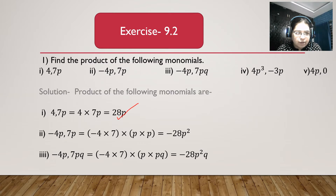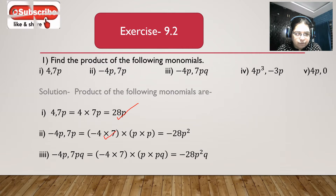Second bit: minus 4p and 7p. Minus 4p multiplied with 7p gives minus 4 multiplied with 7 is minus 28, and p multiplied with p is p square. So we get minus 28p square.